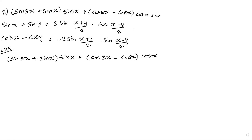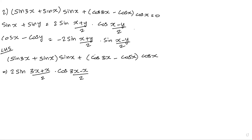Applying sin x plus sin y formula: 2 sin of (x plus y by 2). Here x is 3x and y is x. So 3x plus x divided by 2, into cos of (x minus y by 2), which is 3x minus x divided by 2.